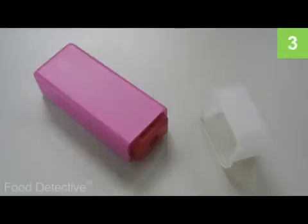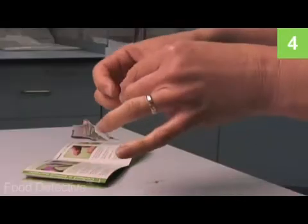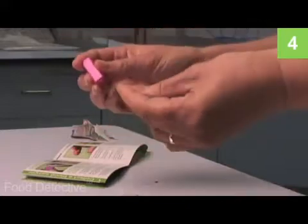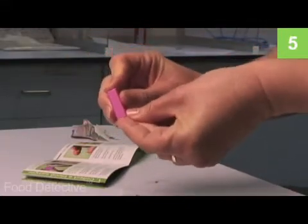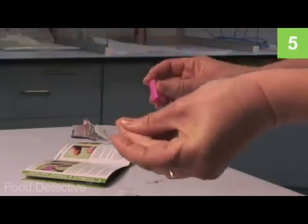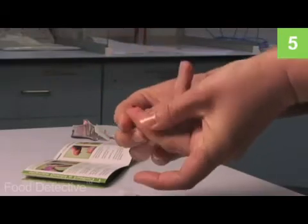Remove the protective cap from the safety lancet. Place the red raised platform end of the safety lancet against the finger or thumb from which you will draw blood. Gently push the lancet against the finger or thumb. A slight prick may be felt as the skin is punctured.